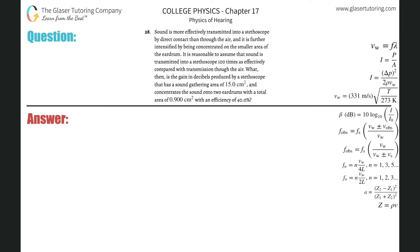Problem 28: Sound is more effectively transmitted into a stethoscope by direct contact than through the air, and is intensified by being concentrated on a smaller area of the eardrum. It is reasonable to assume that sound is transmitted into a stethoscope 100 times as effectively compared with transmission through air.